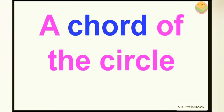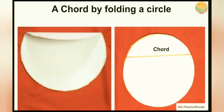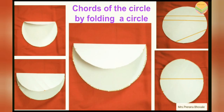Now let's see what is a chord. For this, you have to draw one more circle in a similar way and cut out the circular paper shape like this. Now fold this circular paper shape as shown in the picture. Then press the line of the fold with the pencil. This line is called a chord of the circle. By folding like this at different points, you will get so many chords. It means a circle has an infinite number of chords.